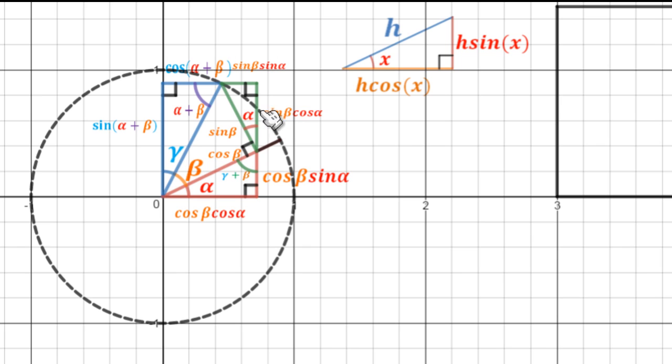So as you can see, we have now obtained our formula, the identity. This blue side is sine alpha plus beta. But since this is a rectangle, it's equal to the green plus red.